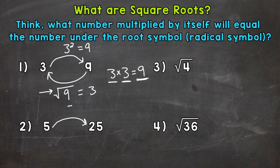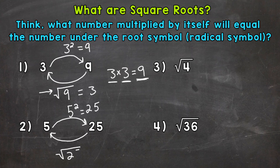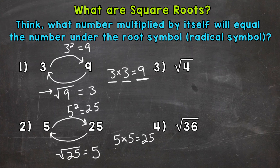Let's move on to number 2. 5 squared: 5 times 5 equals 25. Let's start with 25 and take the square root. What number times itself equals 25? We know 5 times 5 equals 25, so the square root of 25 equals 5.